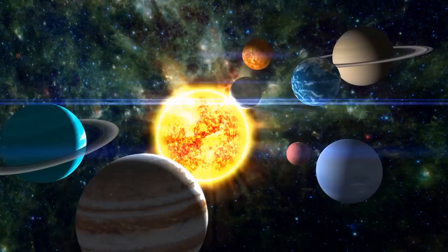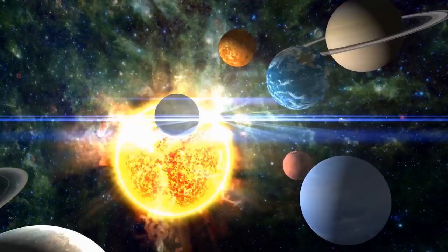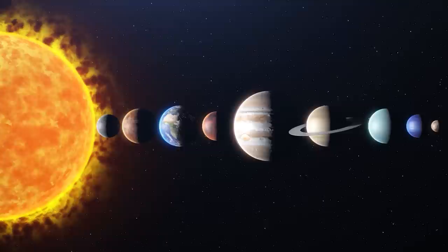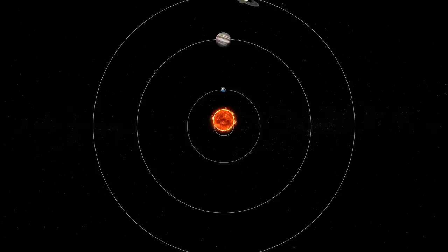You know the usual depiction of the solar system, with the Sun in the center and the planets revolving around it? Well, that's not a completely accurate representation of the movement within our planetary system. You see, the planets don't just revolve around the Sun, but they also pull it in, causing it to shift.